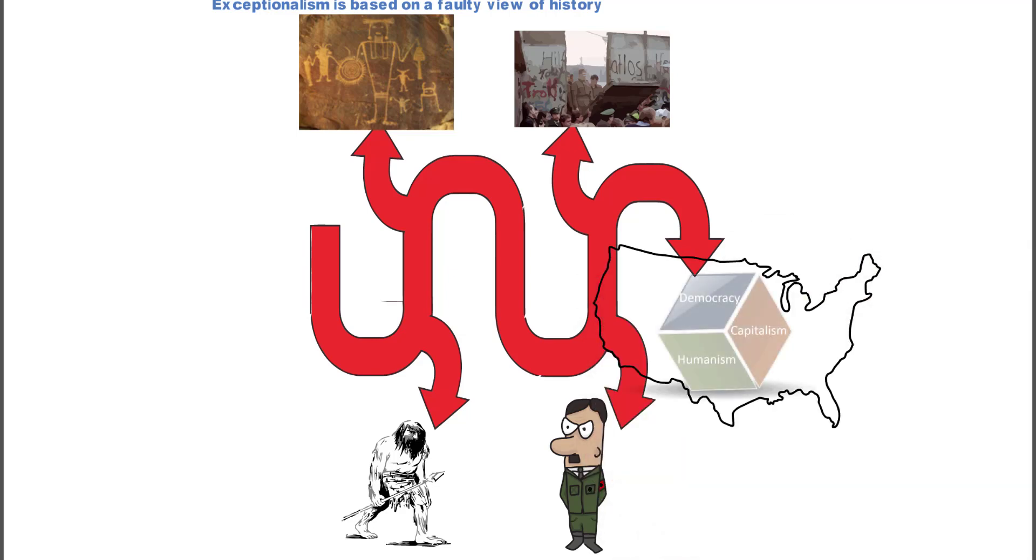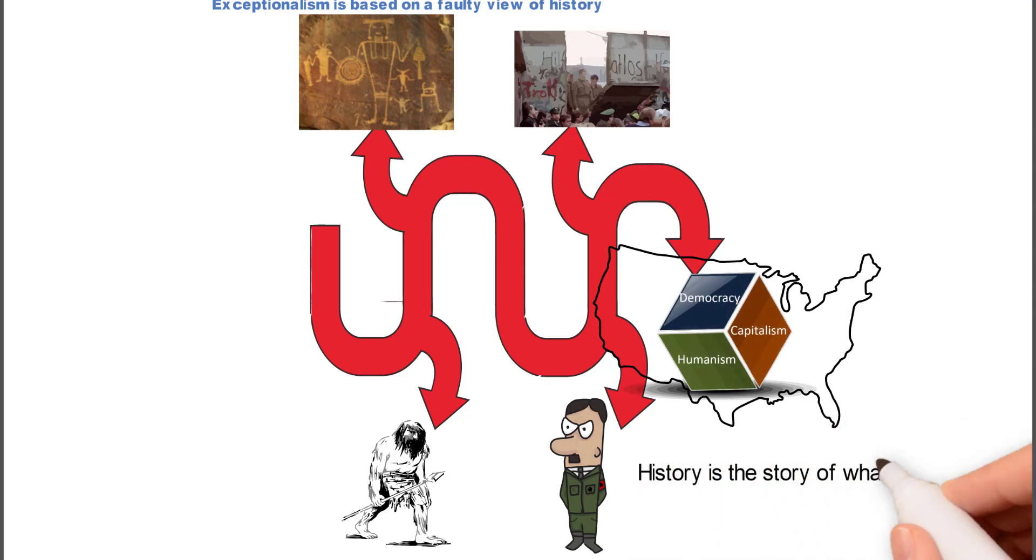what exists today—the democracy, capitalism, and unionism that exists in the United States—is basically exceptional.